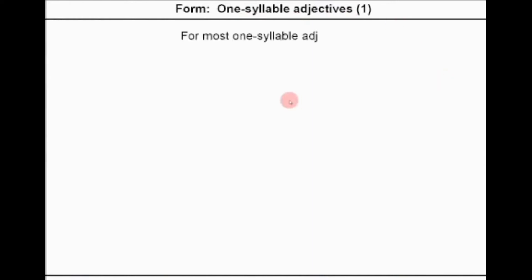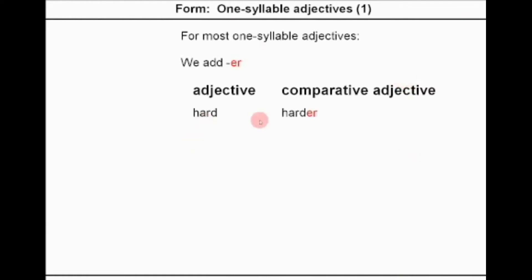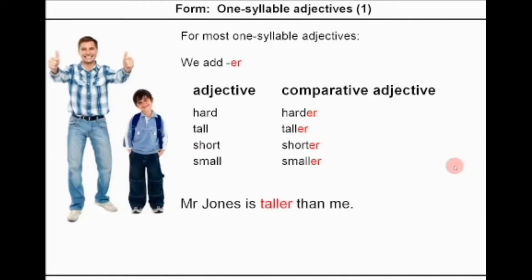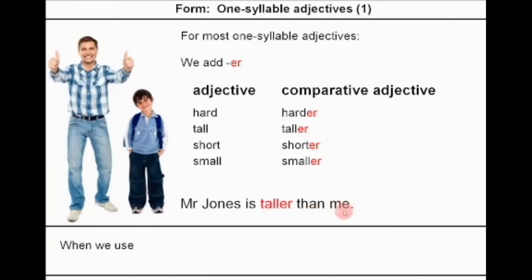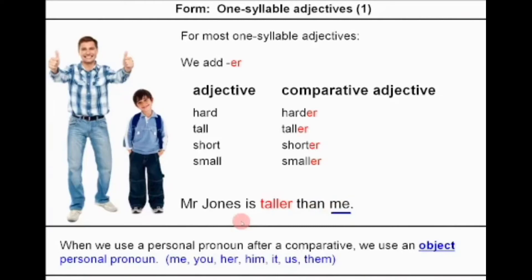Now let's look at the form of comparative adjectives. First of all, the rules for one-syllable adjectives. For most one-syllable adjectives, we add ER. For example: hard → harder, tall → taller, short → shorter, small → smaller. Example: Mr. Jones is taller than me. Notice: when we use a personal pronoun after a comparative, we use an object personal pronoun — like me, you, her, him, it, us, them.